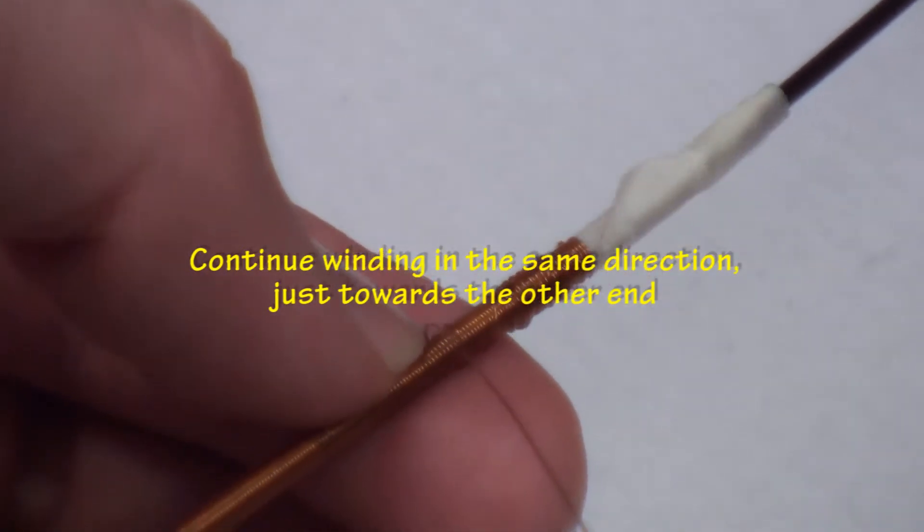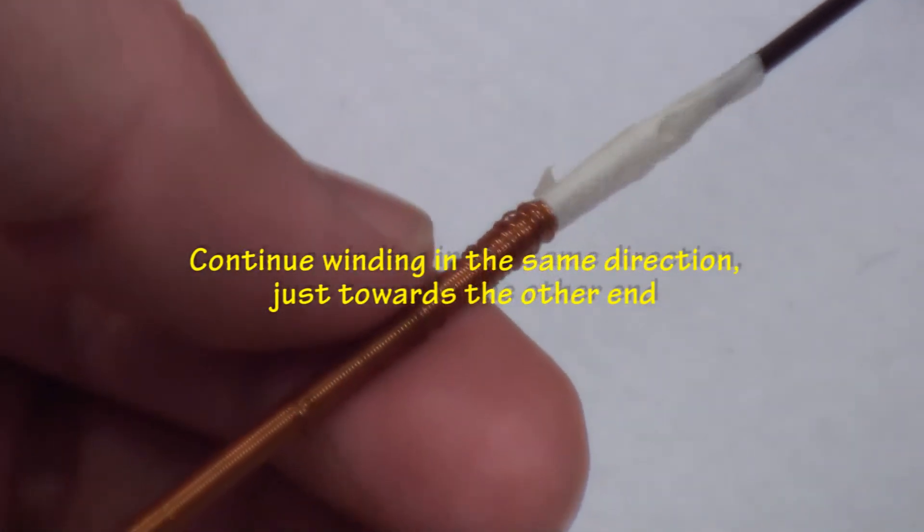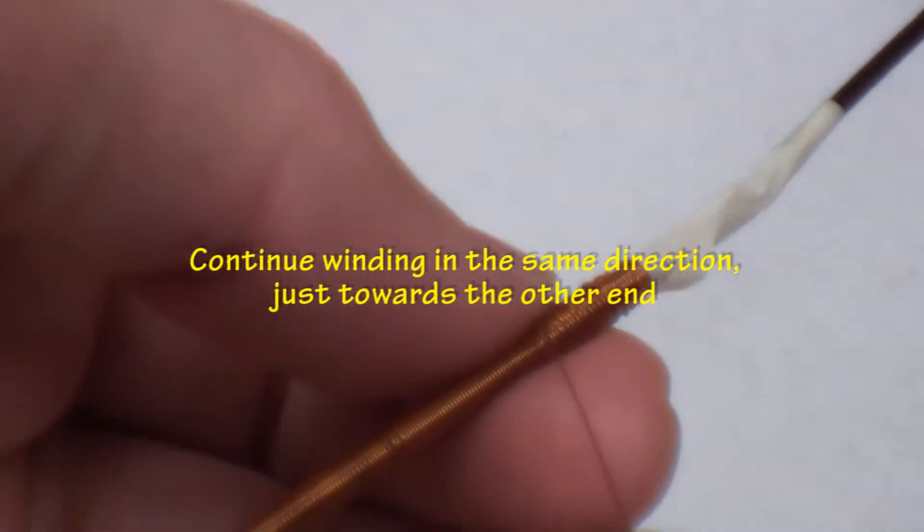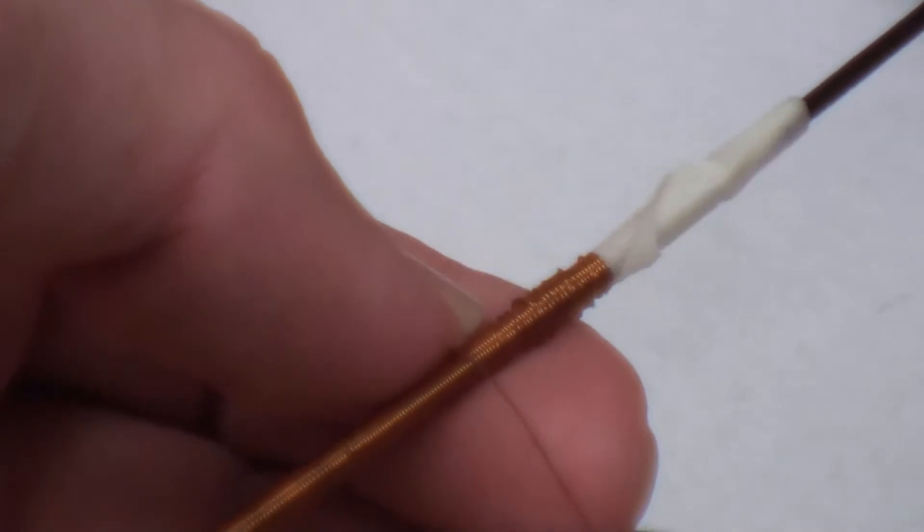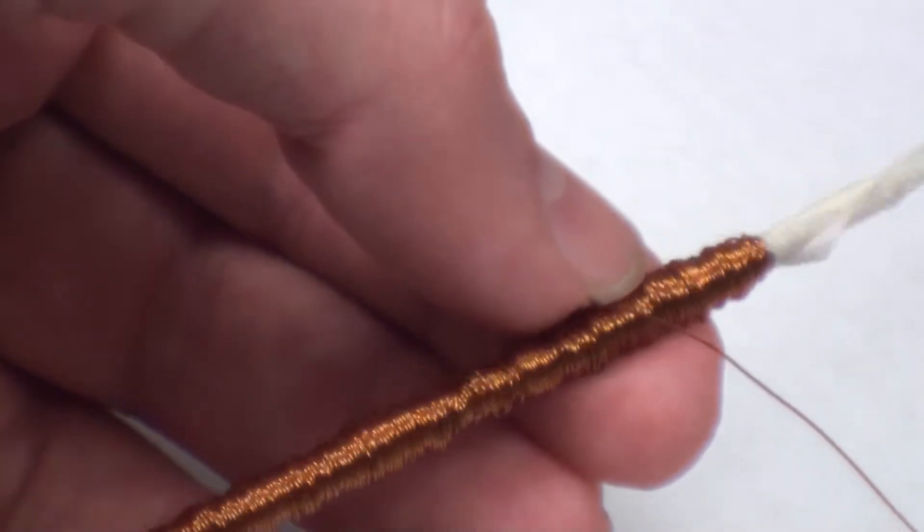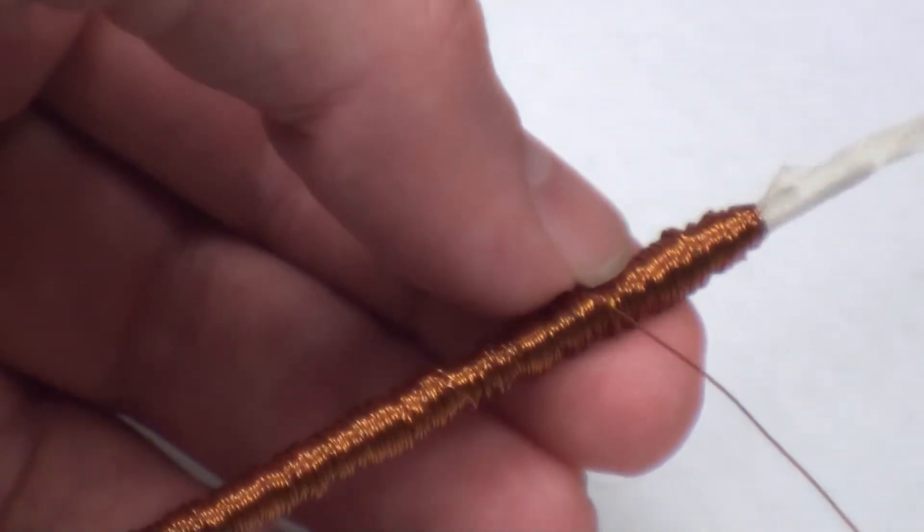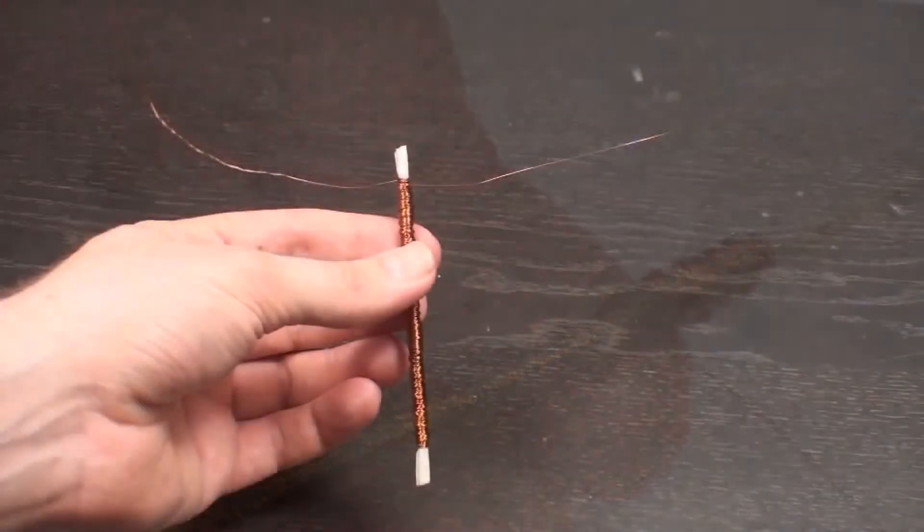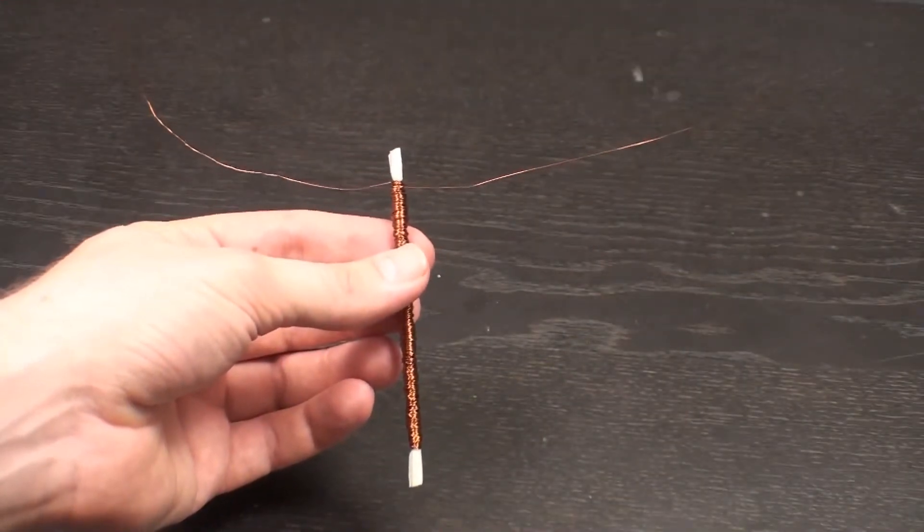When you get to the end of the core, continue winding back to the other end. Continue making the windings as tight as possible. You will need to make a total of 6 layers of wire. When you finish, you should have 2 leads coming off the same end of the core.